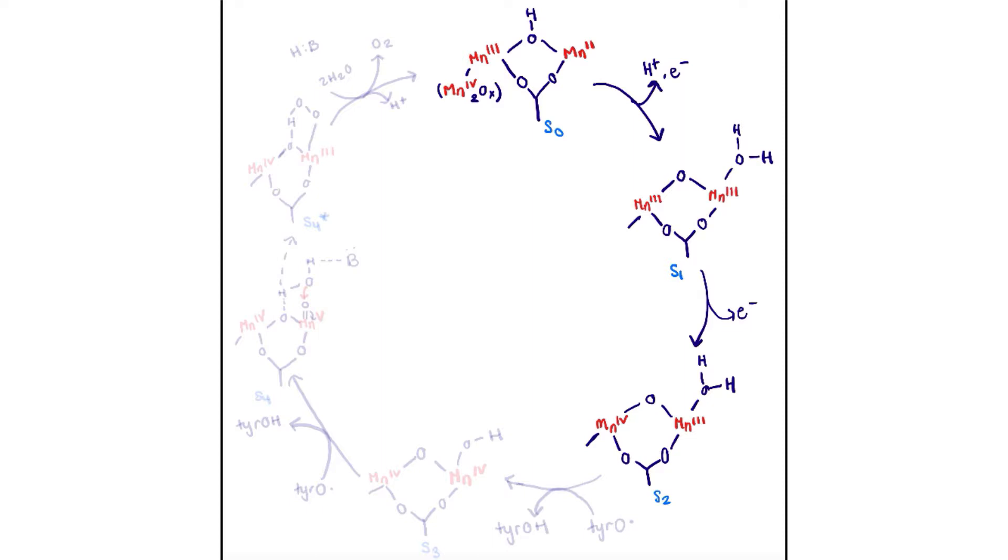From the S0 state to the S1 state, there is a redox reaction taking place, and that manganese 2+ is oxidized to manganese 3+. The electron then goes to P680, or known as the chlorophyll complex.